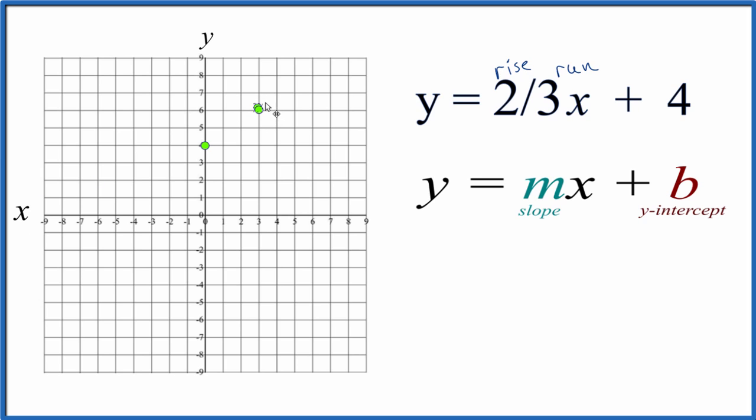We can go from this point, rise one, two, run one, two, three. And you can see the line. We go in the opposite direction as well. We could go down one, two and one, two, three to the left. That would also be on our line.